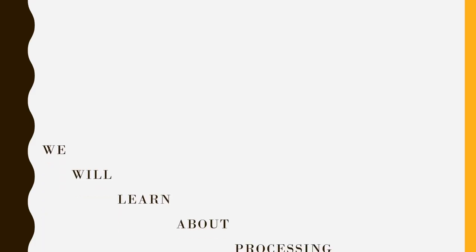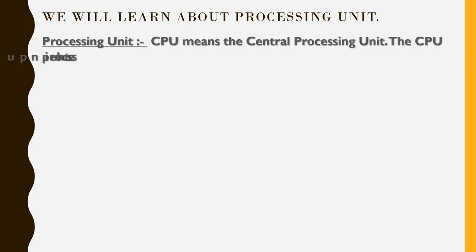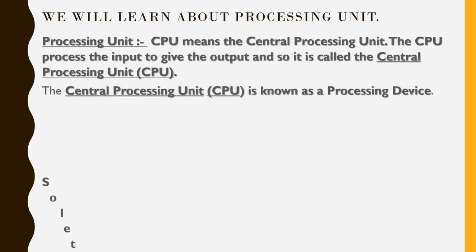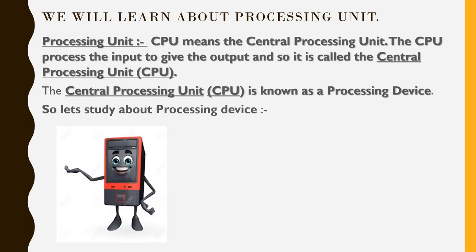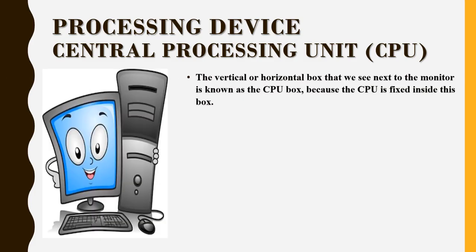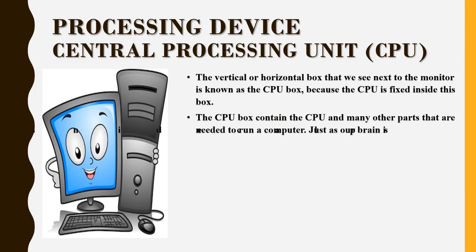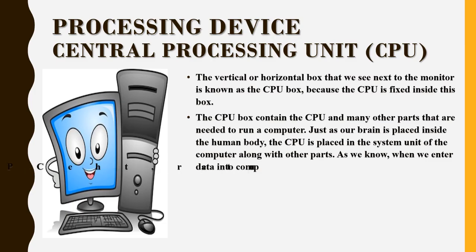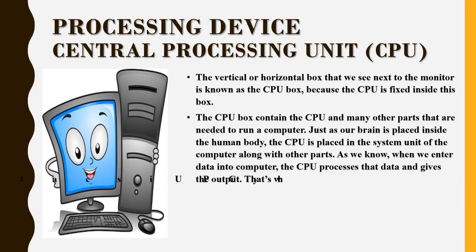Now we learn about the processing unit. CPU means Central Processing Unit. The CPU processes the inputs to give the output, so it is called the Central Processing Unit. The vertical or horizontal box that we see next to the monitor is known as the CPU box, because the CPU is fixed inside this box. The CPU box contains the CPU and many other parts needed to run a computer. Just as our brain is placed inside the human body, the CPU is placed in the system unit of the computer. When we enter data into the computer, the CPU processes that data and gives the output. That's why the CPU is called the brain of the computer.